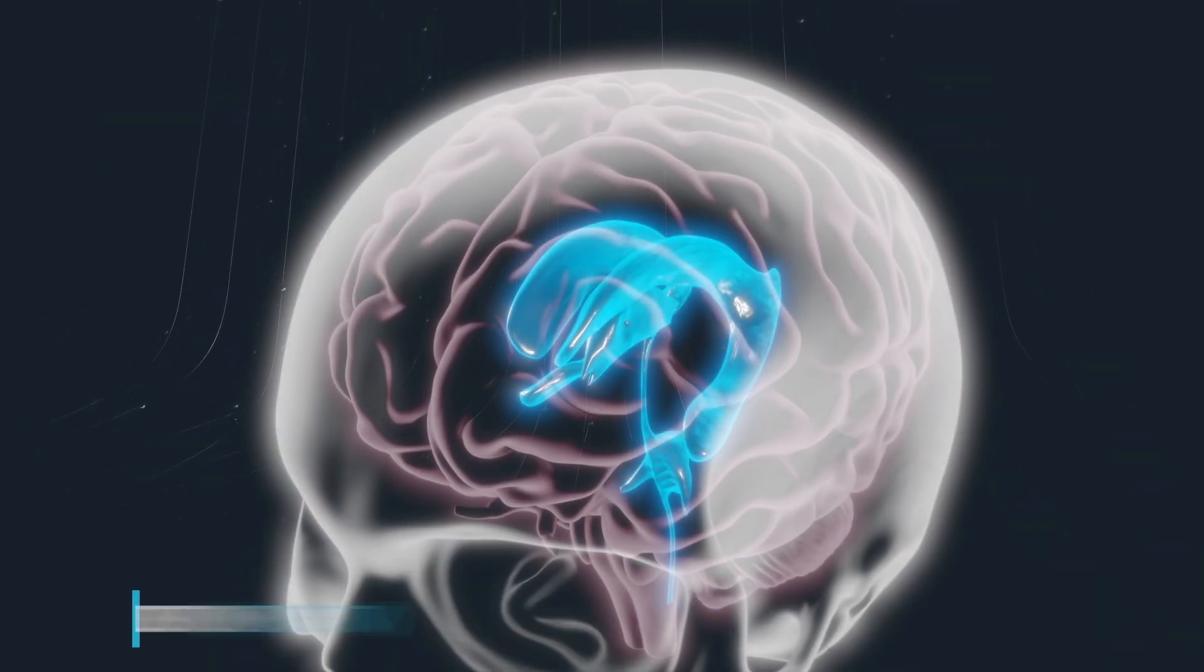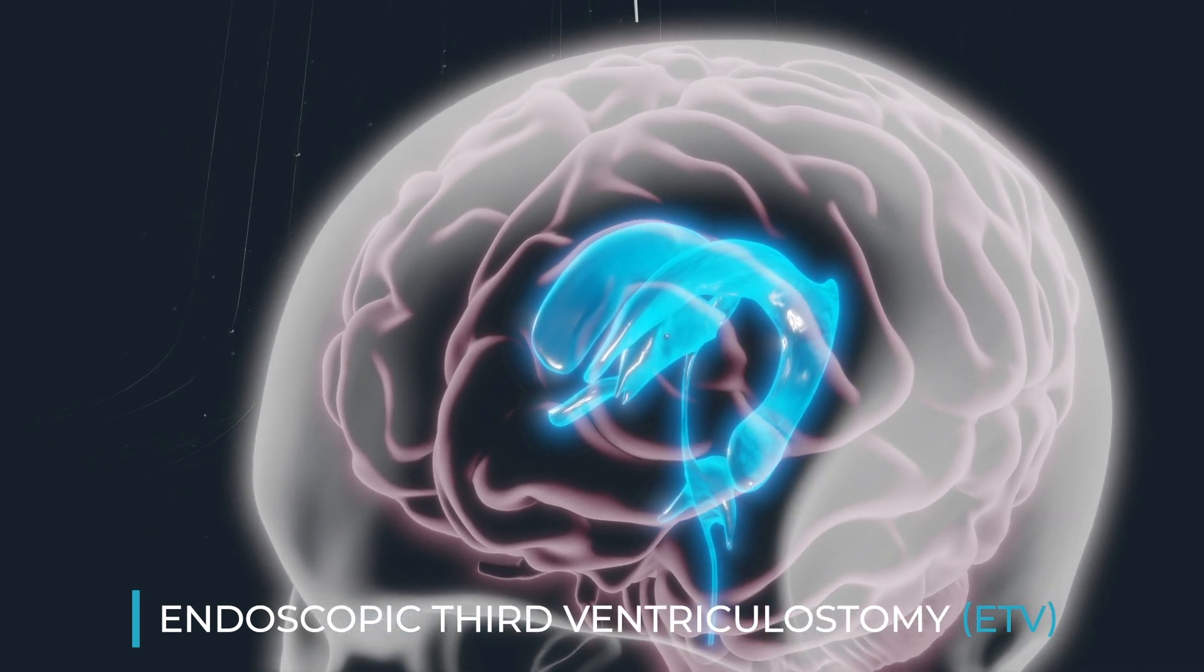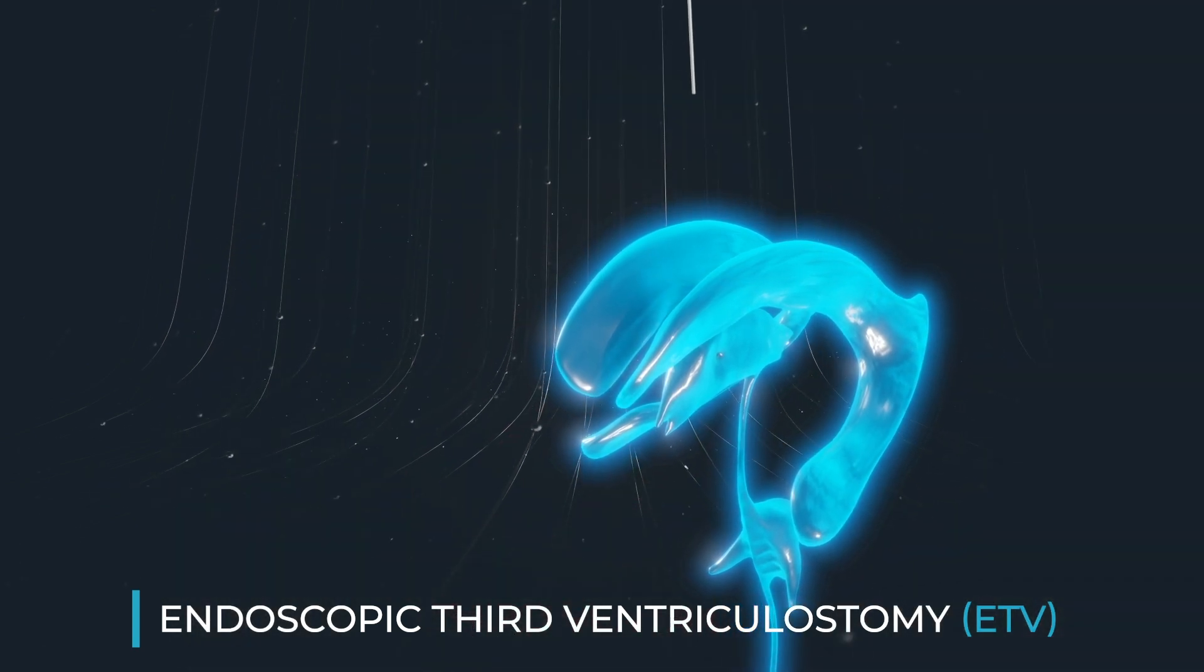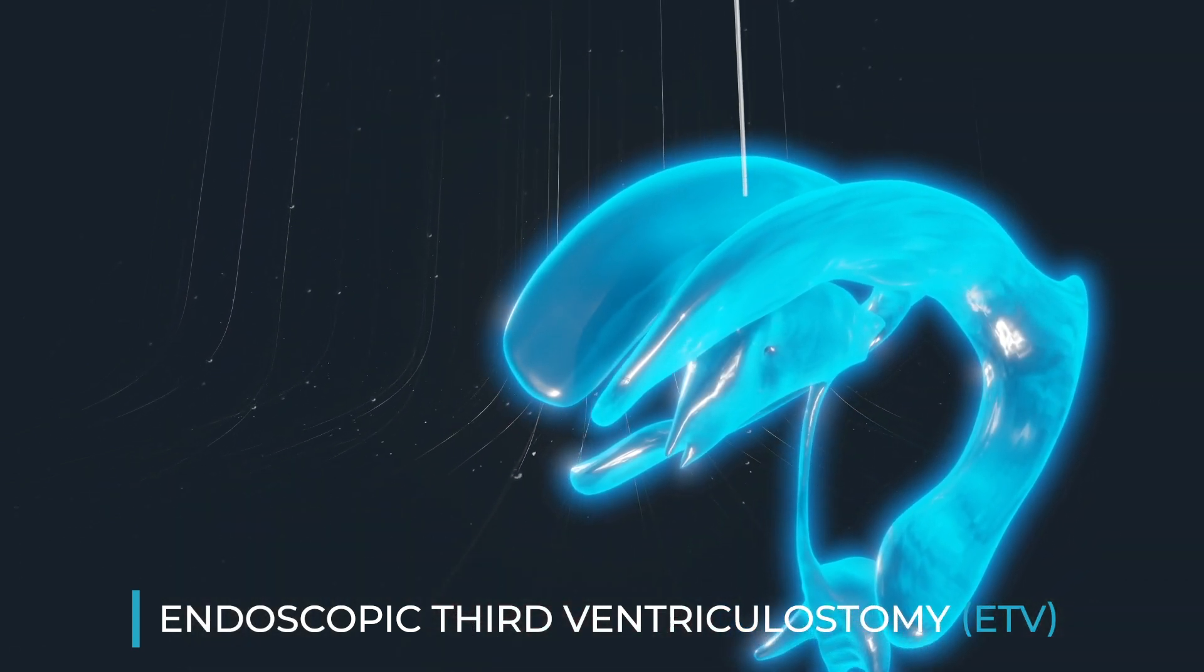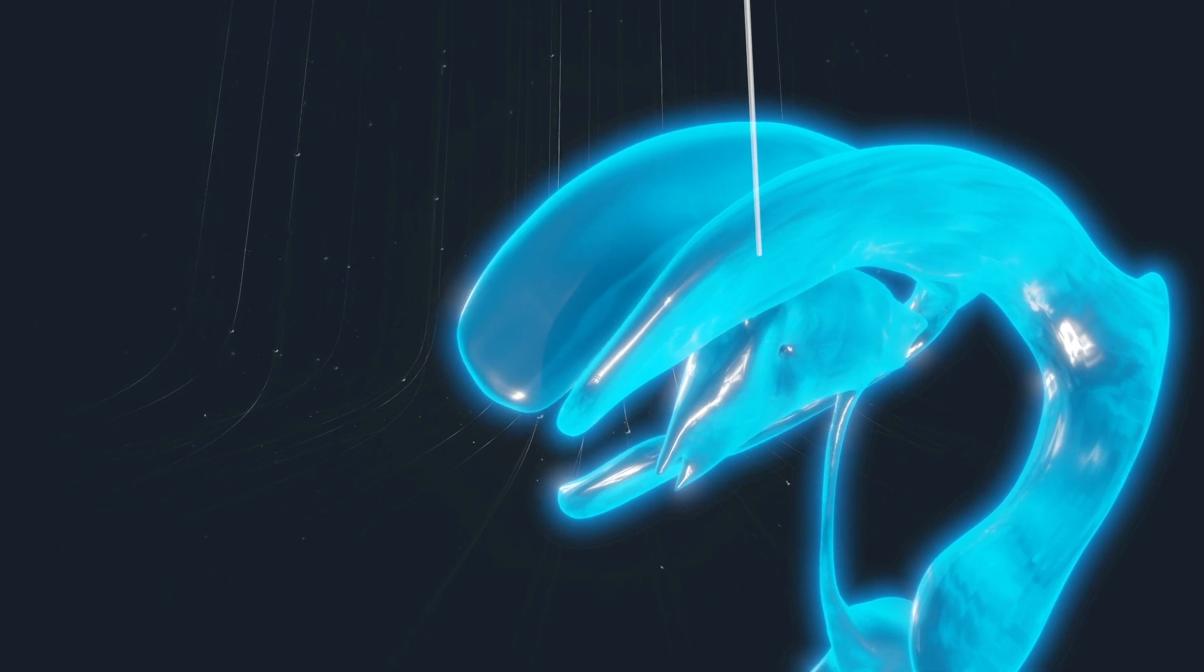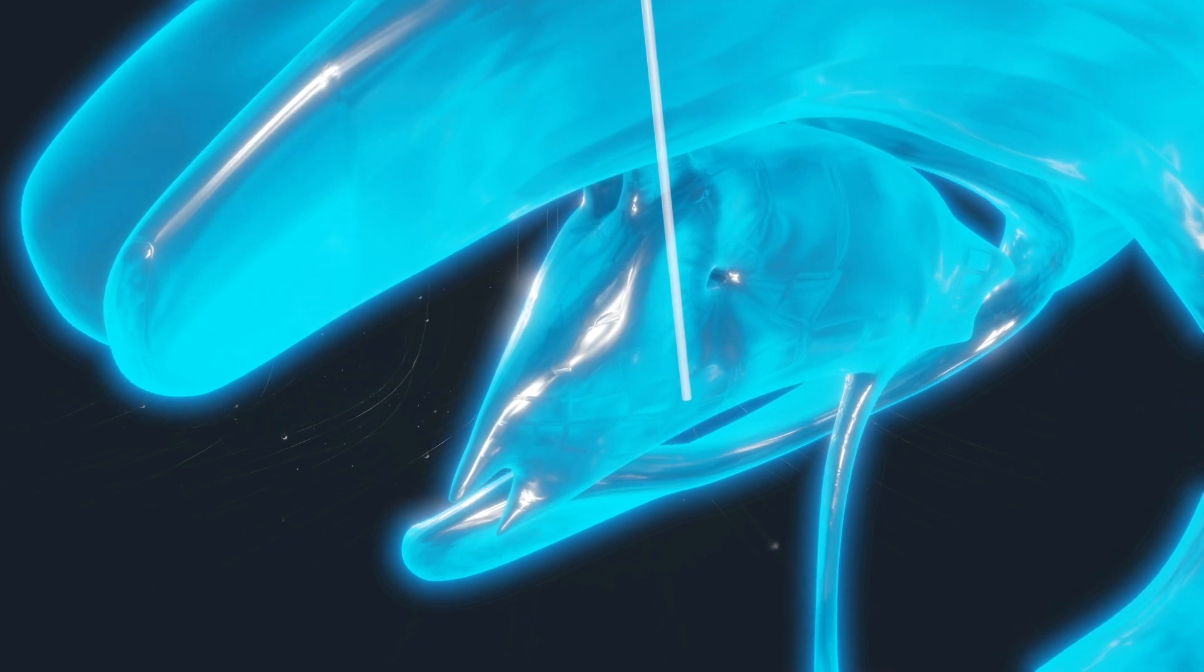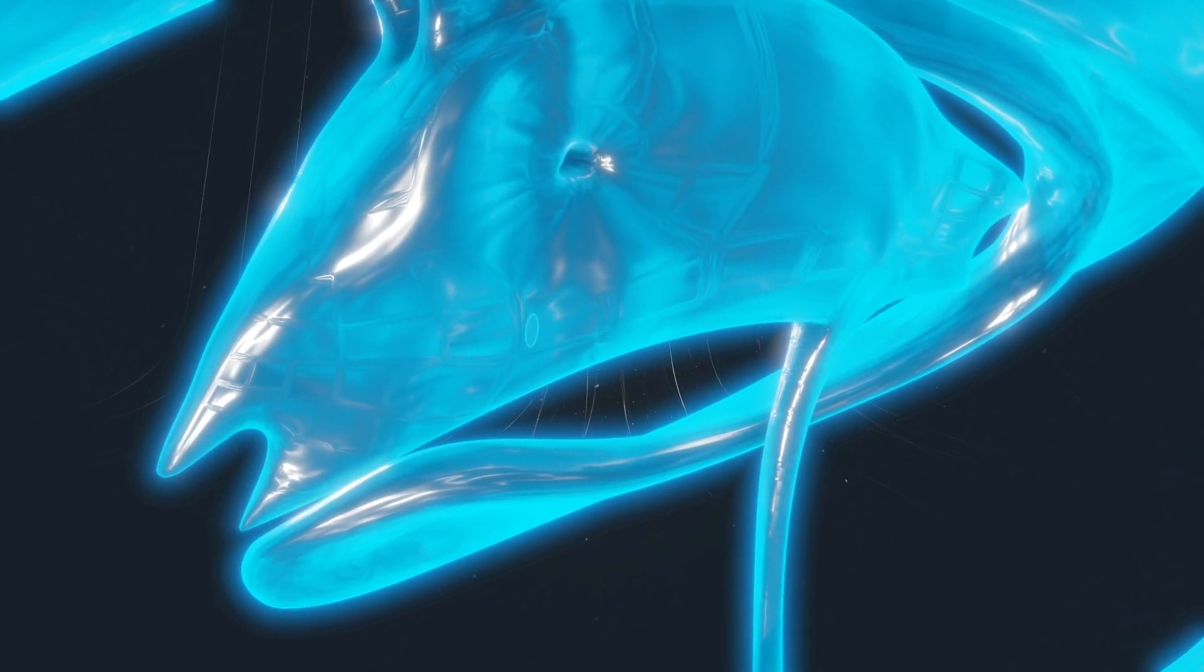An endoscopic third ventriculostomy, or ETV, is an internal shunt that allows CSF that is building up to bypass a blockage and be absorbed by natural pathways. A small hole is made in the skull and a surgical tool called an endoscope is gently guided through the brain into one of the lateral ventricles and then passes down into the third ventricle. A hole is punctured in the membrane on the floor of the third ventricle, creating a pathway for fluid to flow out of the ventricles and around the brain.